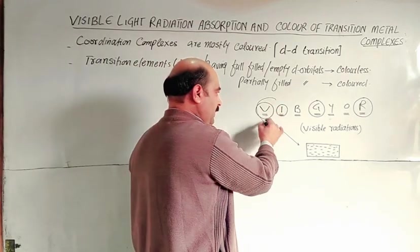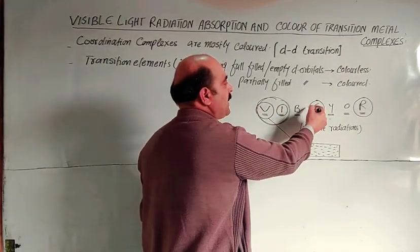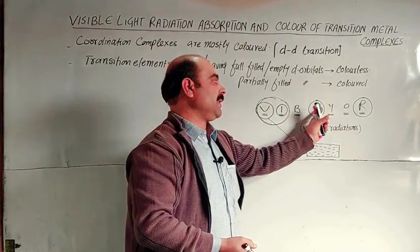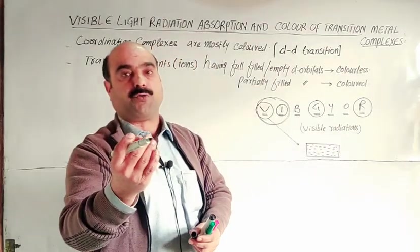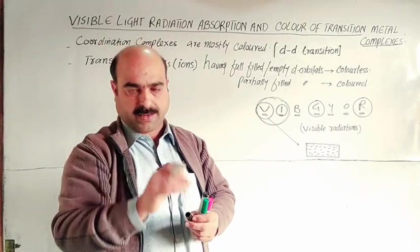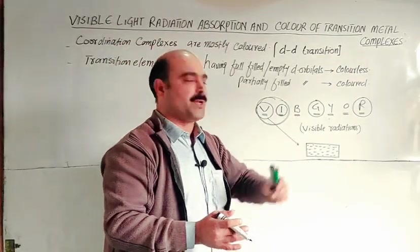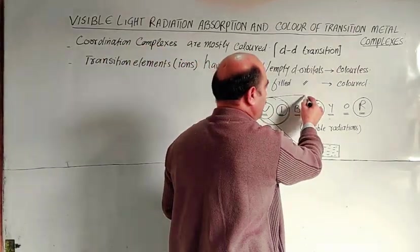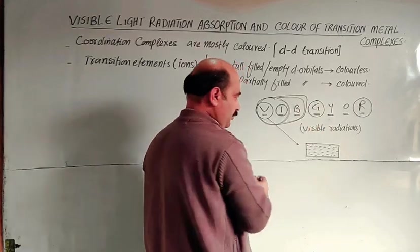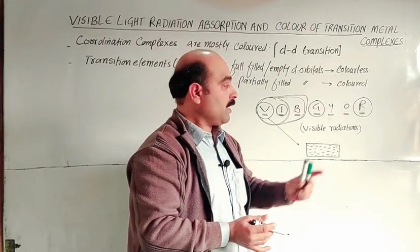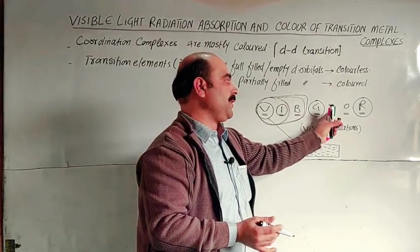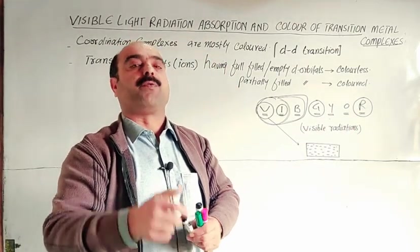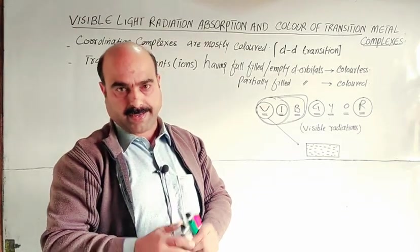If three colors are absorbed and four are emitted, those four will be green, yellow, orange, and red mixed together. That complementary color will be the color of the compound. This is due to d-d transition.